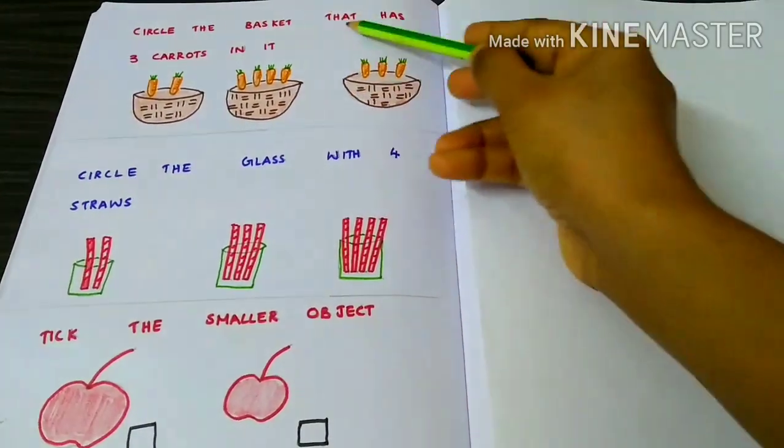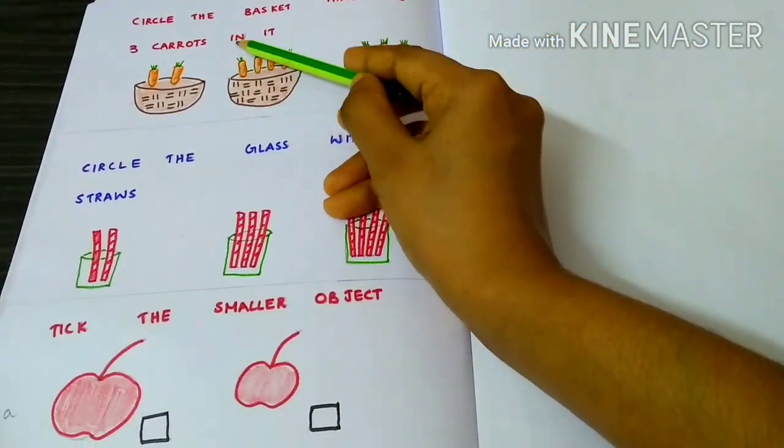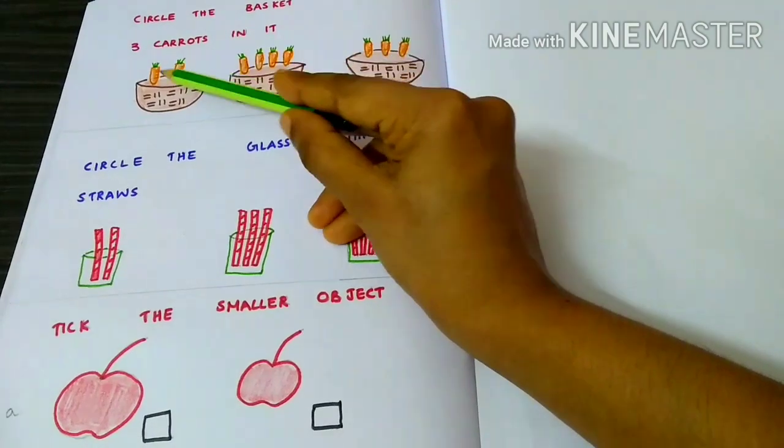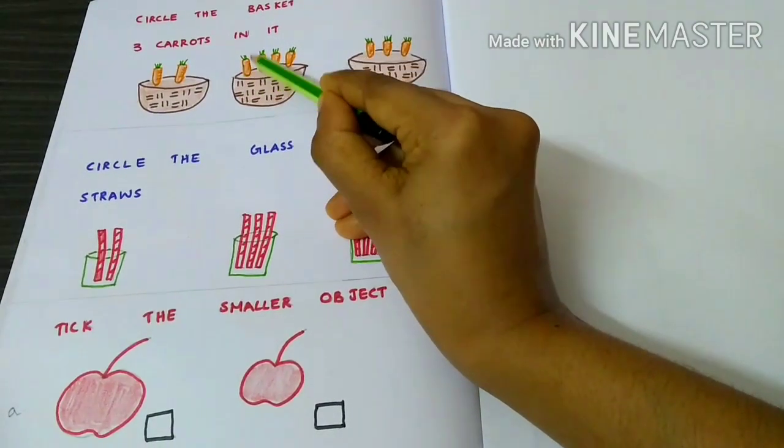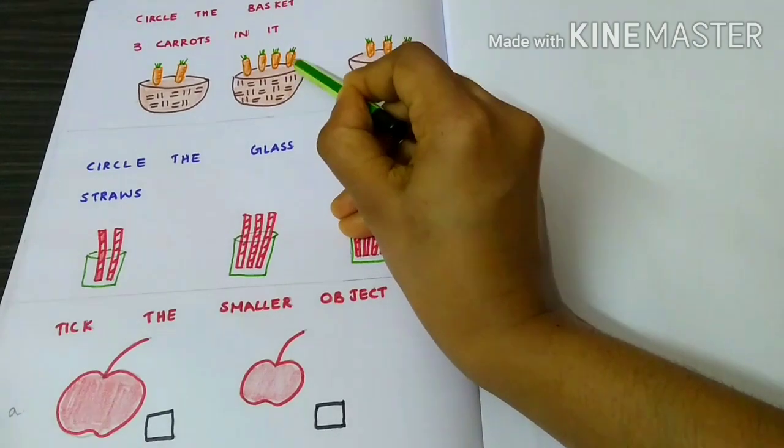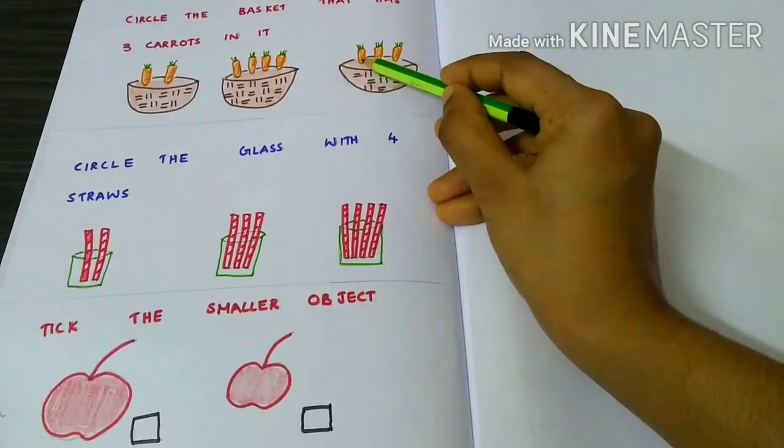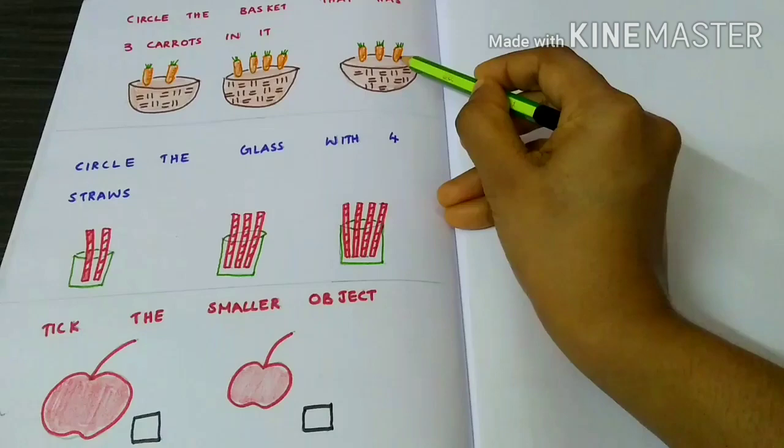Circle the basket that has three carrots in it. 1, 2, 1, 2, 3, 4, 1, 2, 3.